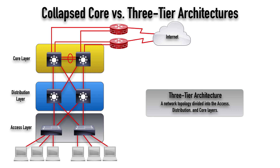First, let's focus on the access layer. Notice down at the access layer, we have what are probably layer two Ethernet switches — layer two meaning that we're not doing any routing. These devices are making forwarding decisions based on MAC address information. We've got devices like laptops, maybe printers, other Ethernet devices, maybe IP phones connected into these Ethernet switches at the access layer.